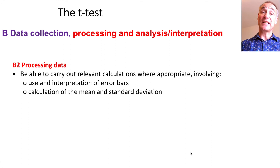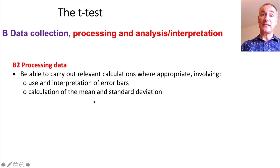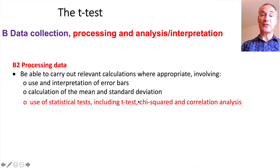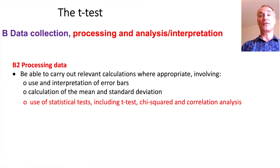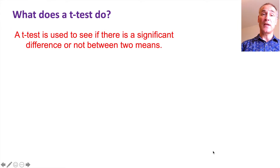After last week looking at standard deviation, we're going to go further now and look at what's called the t-test. You've already looked at the mean and how to calculate standard deviation. The t-test uses both of these as a statistical test to look at correlation.